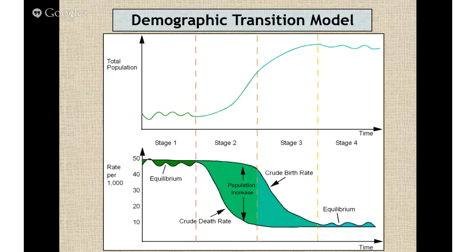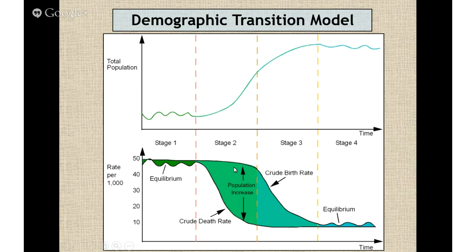Here's an overview of the model. All countries on the planet will exist in one of four stages. No countries are currently in stage one, and most are in stages two, three, or four — with more in stage three than stage four. Your big population boom happens in stage two and early stage three, and then things flatten out. The death rate drops drastically from stage one to stage two, and when you have that huge drop in death rate with a birth rate that's relatively stable, that difference is where you see the population increase.